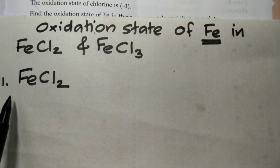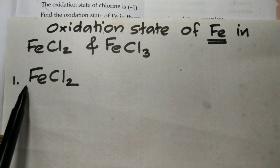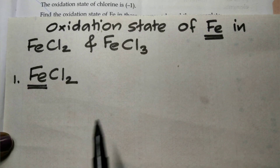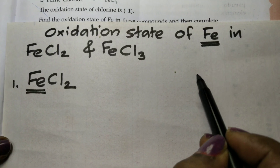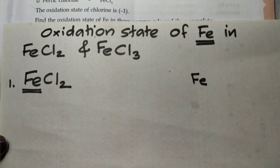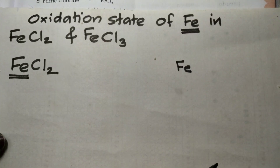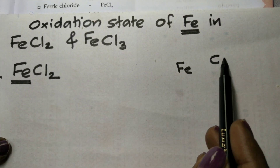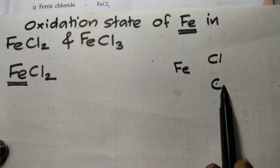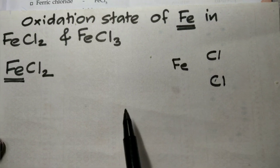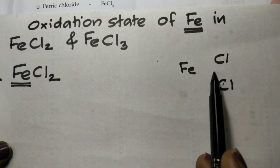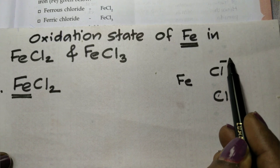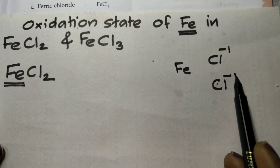We will solve FeCl₂ to find the oxidation state of Fe. In FeCl₂, there are 2 chlorine atoms. Chlorine has an oxidation state of minus 1.